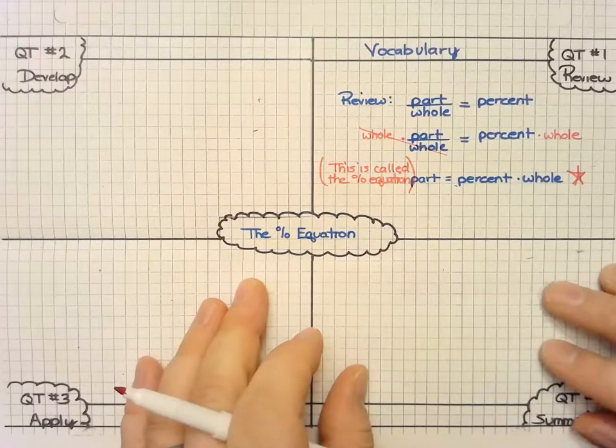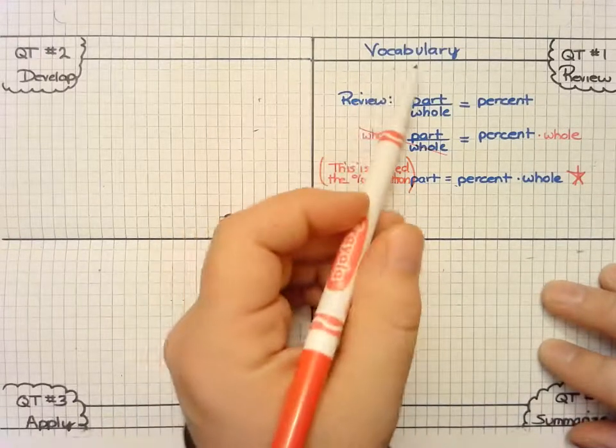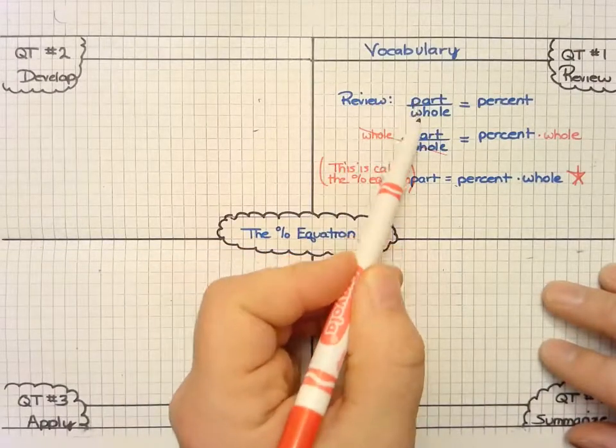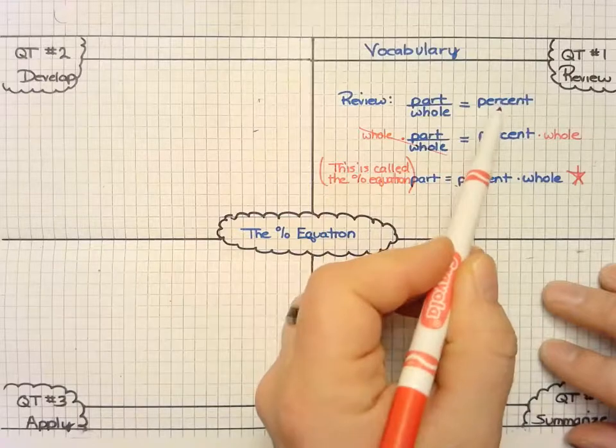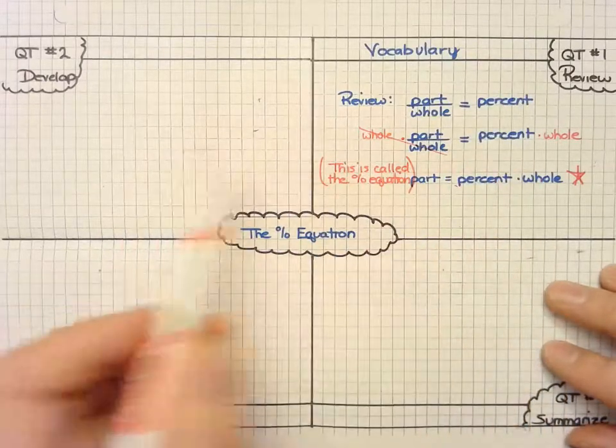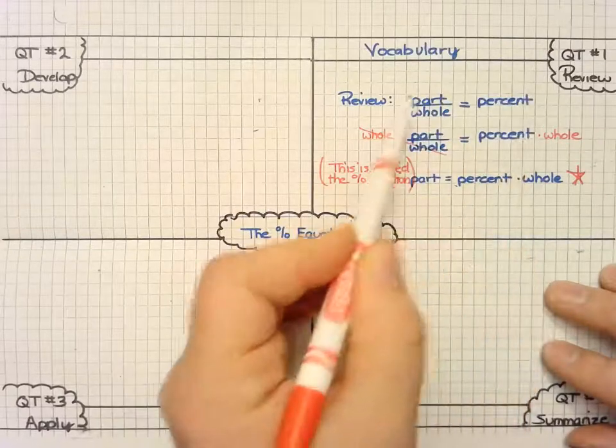The percent equation. I'd like to review some vocabulary with you. Yesterday we talked about the part over the whole is equal to the percent. When we write the percent, we can write it as a fraction, and that is our percent proportion.